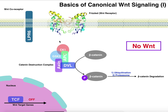When there's no Wnt, we have this complex of proteins — there's a bunch of them: DVL, Axin, APC. And we have two enzymes here that are kinases. GSK3 is glycogen synthase kinase 3. Glycogen synthase kinases do not just phosphorylate glycogen synthase — they actually have many other target proteins. And then CK1, casein kinase 1. This entire complex of five proteins is called the beta-catenin destruction complex.